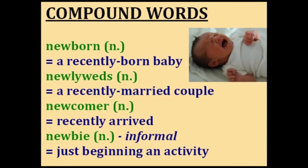Four compound words with the word new. A baby that has just recently been born is a newborn. Two people who have just recently been married are newlyweds — that comes from newly and wedded, the word for the marriage ceremony. Someone who has recently arrived at an event or joined a social group is a newcomer. And we have the slang word newbie — an informal word for someone who is just beginning some activity and doesn't have much knowledge or experience yet.